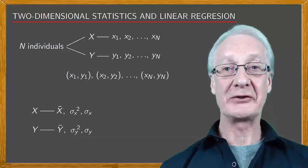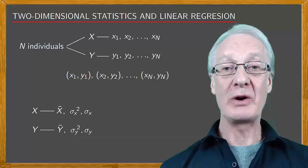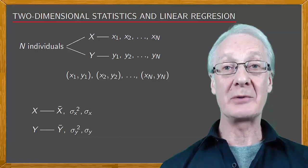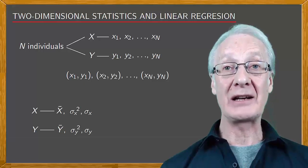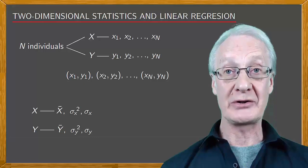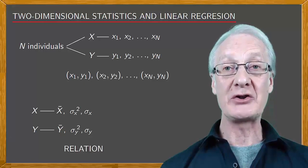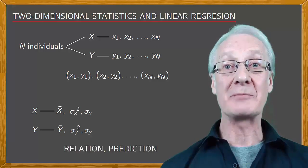In two-dimensional statistics, by contrast, we work with the two statistical variables x and y together to see how they're related, and can even predict the value of one of the variables when the value of the other is known. In other words, we study the relationship between the variables, and then make predictions.